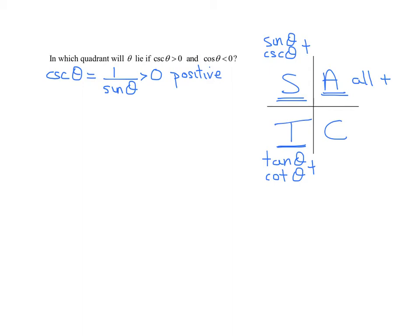Everybody else is negative. The C in quadrant 4 stands for the cosine of theta, and its reciprocal, the secant of theta, are both positive. Everybody else is negative in quadrant 4.